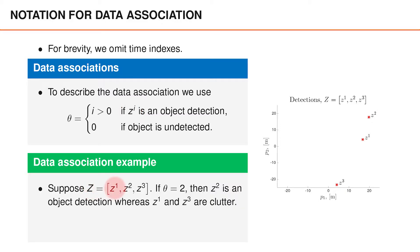For instance, suppose the measurement matrix contains three vectors, and that theta is equal to two. Then that means that the second measurement vector z is an object measurement, whereas the other two vectors are clutter measurements. As you can see, we've illustrated a measurement matrix with three vectors in this figure, and if theta is equal to two, this measurement would be an object measurement. If instead theta is equal to zero, the object is undetected, and all three measurements in the matrix z are clutter detections.